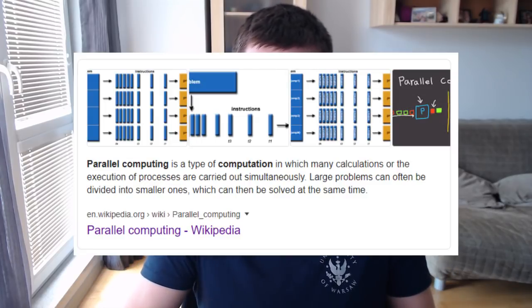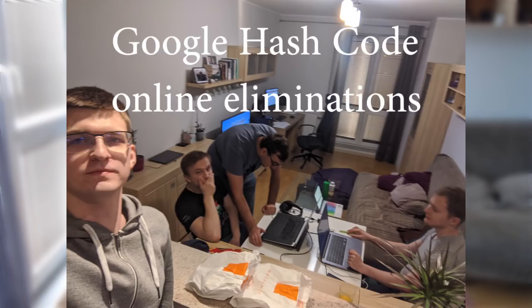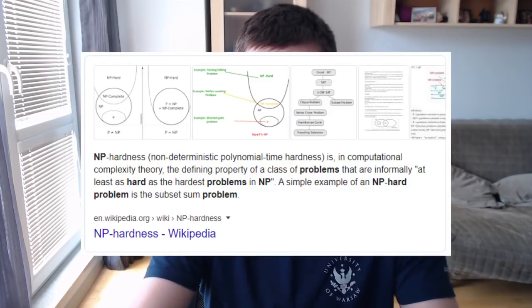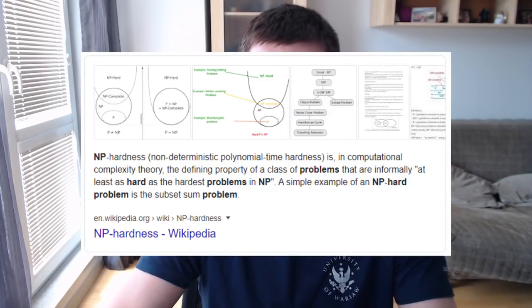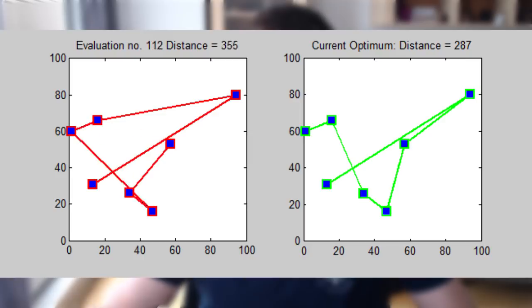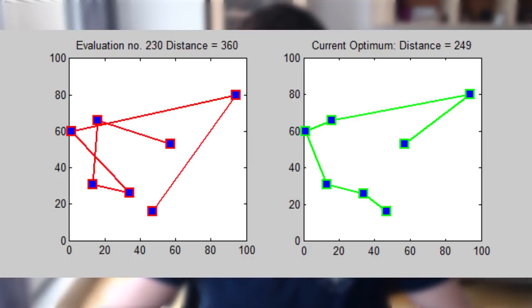Some less standard contests include Distributed Code Jam, which was held a few times and involved writing parallel algorithms, and Google Hash Code, an optimization contest where you solve a problem as well as you can — there's no binary optimal solution, you just keep improving. It's typically an NP-hard problem. An example would be the Traveling Salesman Problem (TSP), where given a set of cities you find the shortest path visiting all of them. Nobody knows a polynomial solution, but you can keep improving a slow solution to get better and better answers.